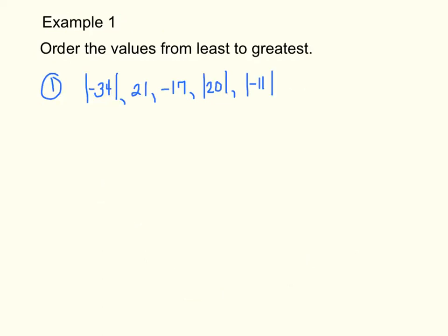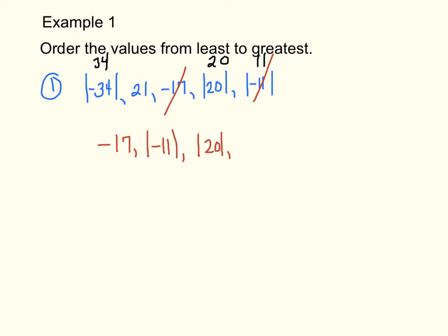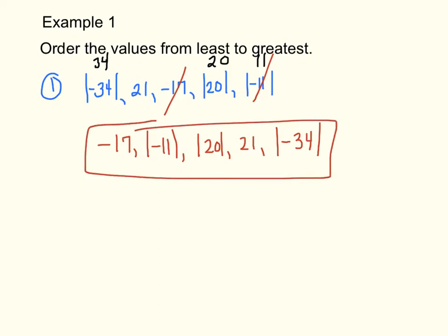Example number 1: Order the values from least to greatest. We have the absolute value of negative 34, 21, negative 17, the absolute value of 20, and the absolute value of negative 11. The absolute value of negative 34 is 34, the absolute value of 20 is 20, and the absolute value of negative 11 is 11. Ordered from least to greatest: negative 17, then |−11| = 11, then |20| = 20, then 21, and the largest is |−34| = 34.